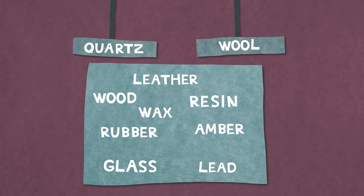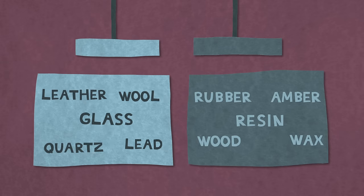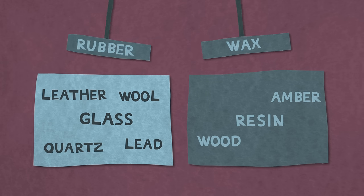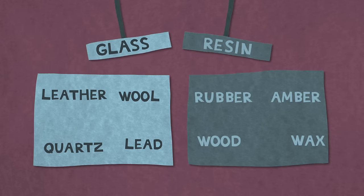With this extra knowledge, de Fay found that there were two distinct groups of electrics. Any two objects from the same group will always repel, while a pair of one from each group will always attract.